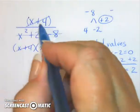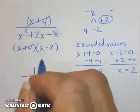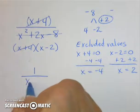When you cancel everything, you're left with a 1, and on the bottom I have my x minus 2.